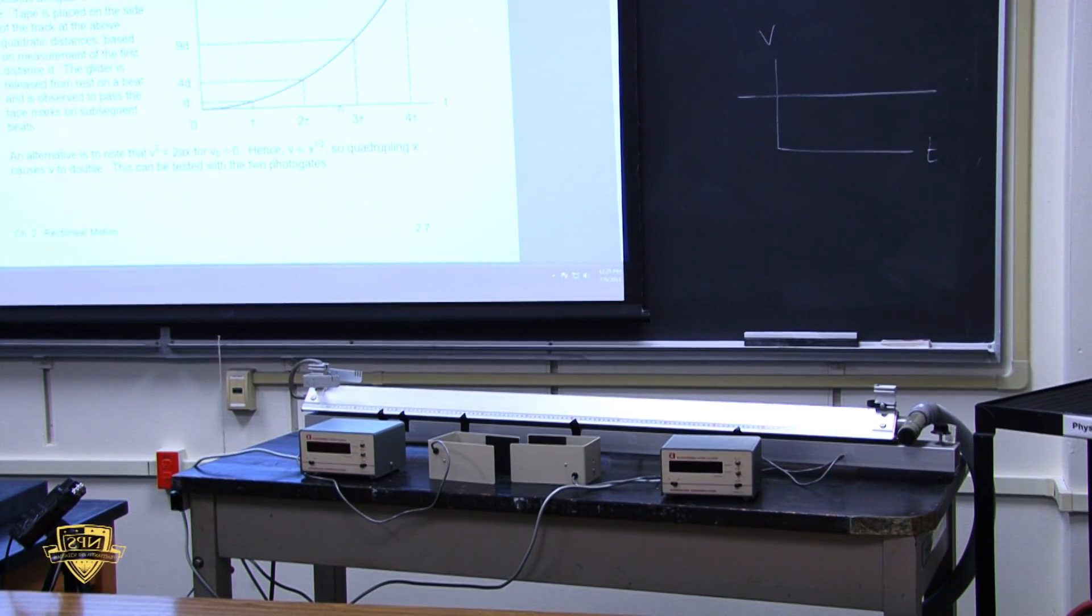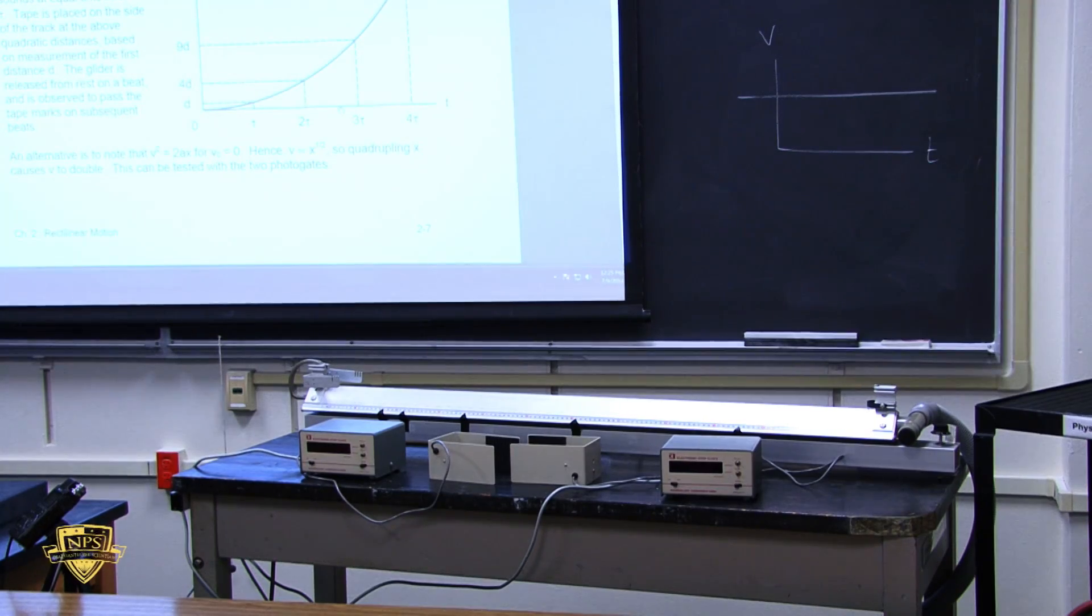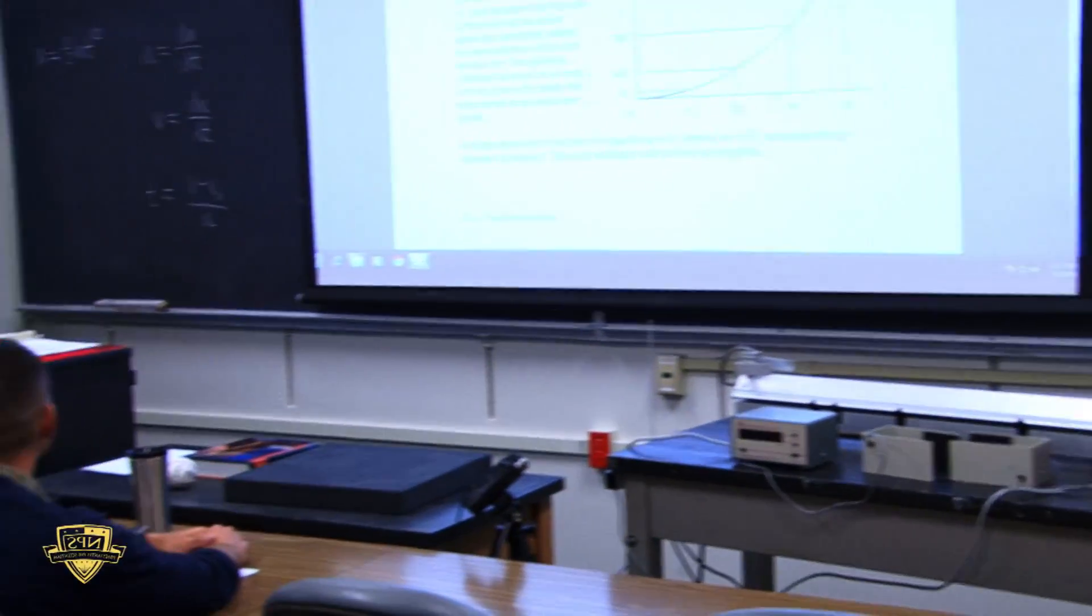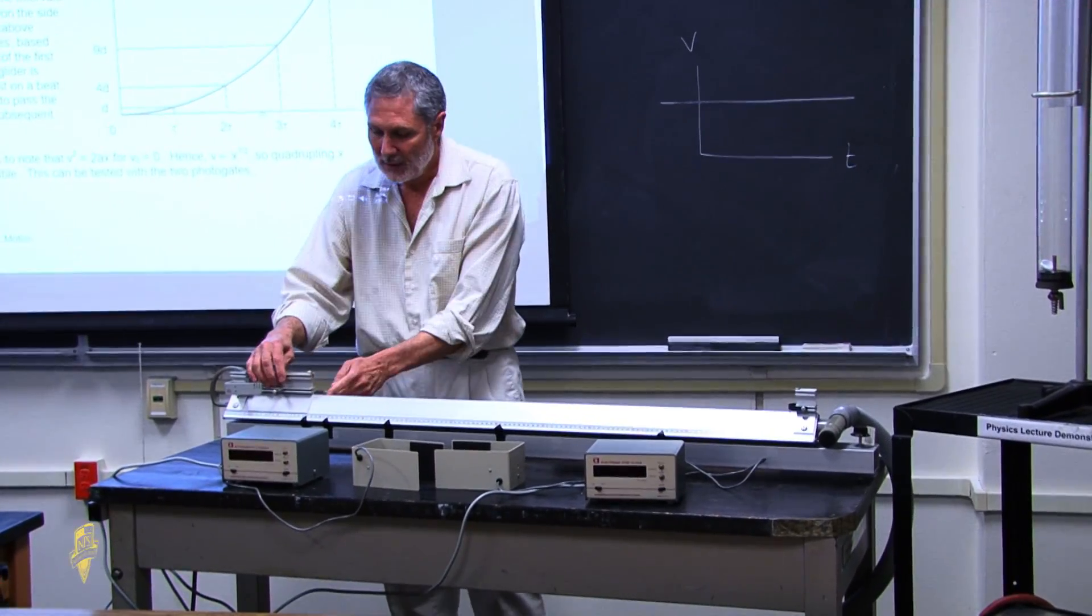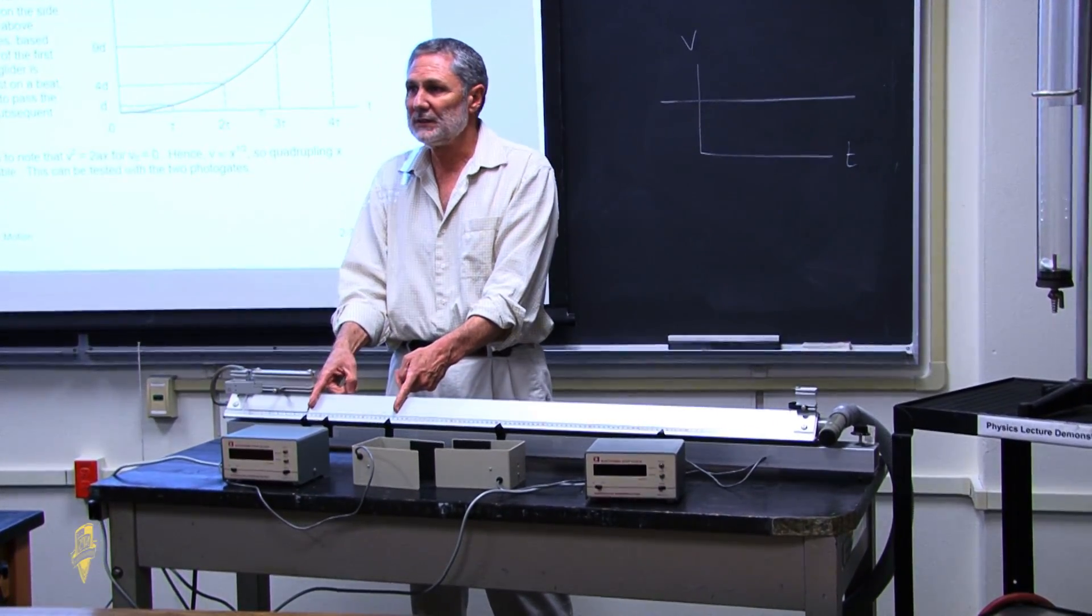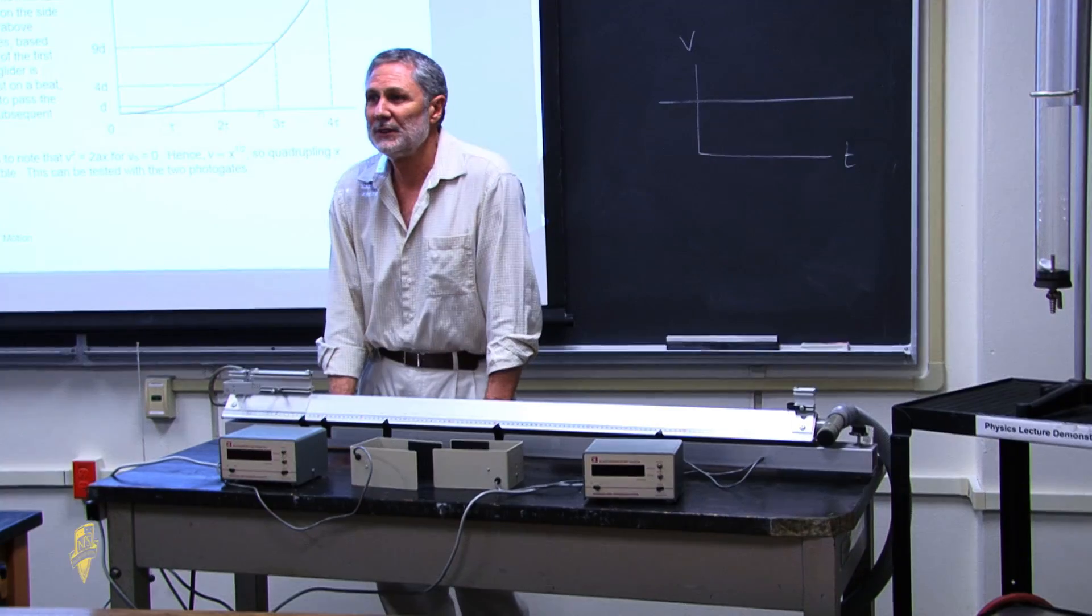So you said, x equals one-half a t squared is in relation to what now? X is the distance of the glider starting from here. This is x equals zero. T is the time, and a is the acceleration.